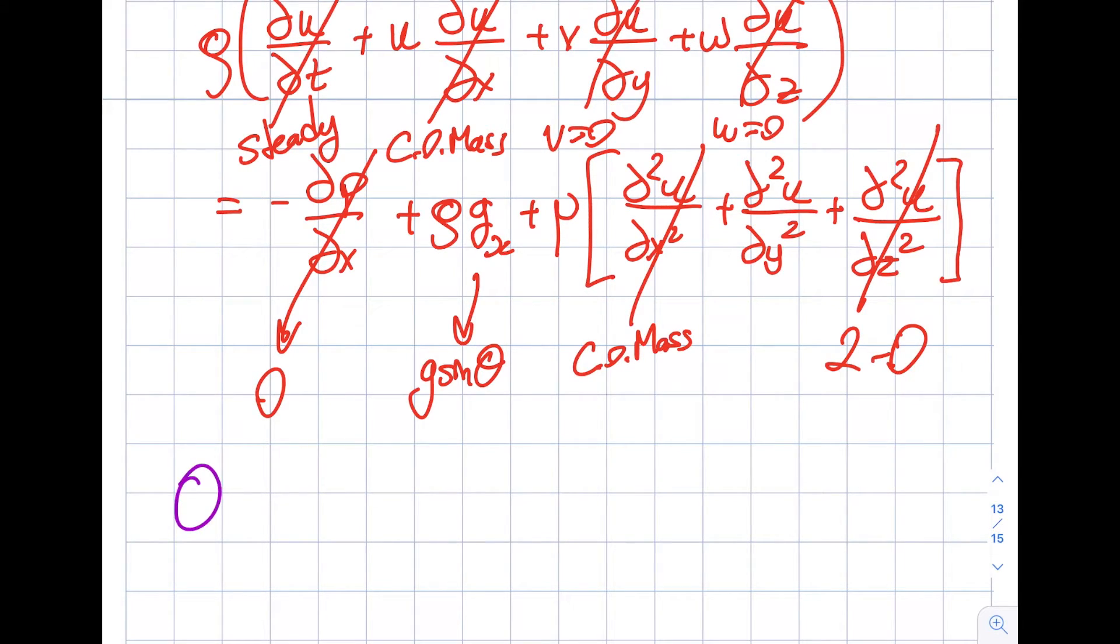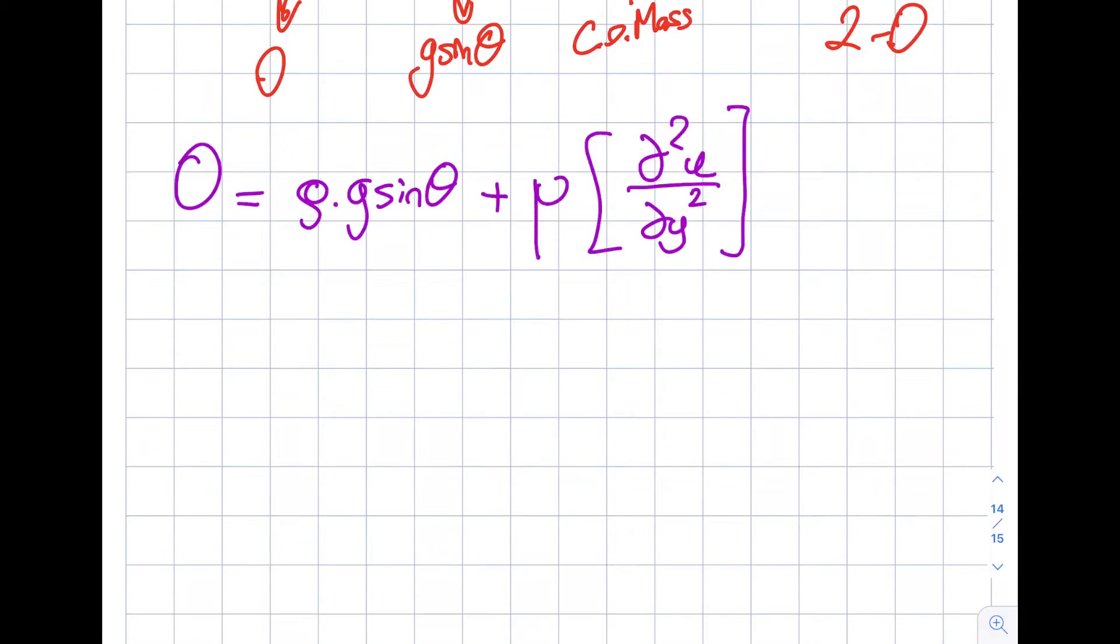So the left-hand side becomes zero, the right-hand side becomes rho g sine theta plus—do not forget the viscosity—mu del square u del y square. So then if I move this, I want to leave alone this del square u del y square just like I did in previous segments. And then what becomes—let's not forget the negative—minus rho g sine theta divided by viscosity. That's all I have.